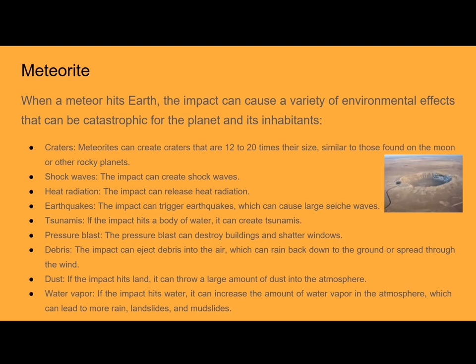Earthquakes can cause large sea waves — tsunamis. If the impact hits a body of water, it can create tsunamis. The pressure blast can also destroy buildings and shatter windows. The impact will also inject debris into the air, which can rain back down onto the ground or spread through the wind. If the impact hits land, it can throw a large amount of dust into the atmosphere. If the impact hits water, it can increase the amount of water vapor in the atmosphere, which can lead to more rain, landslides, and mudslides.